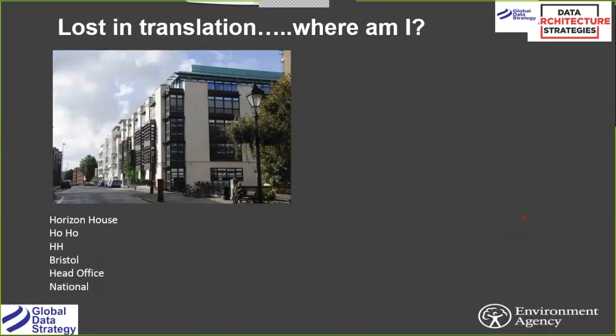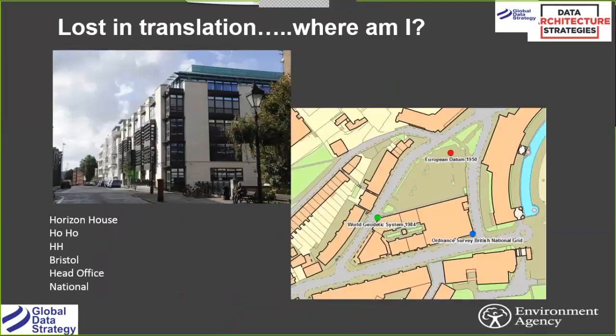We even have to control things around location data. That building is plotted using three different coordinate reference systems — and the building moves. We're fairly close to the datum point, so the difference isn't huge, but it could be the difference between receiving a flood warning, which is based on location. Those are the kinds of problems we face.